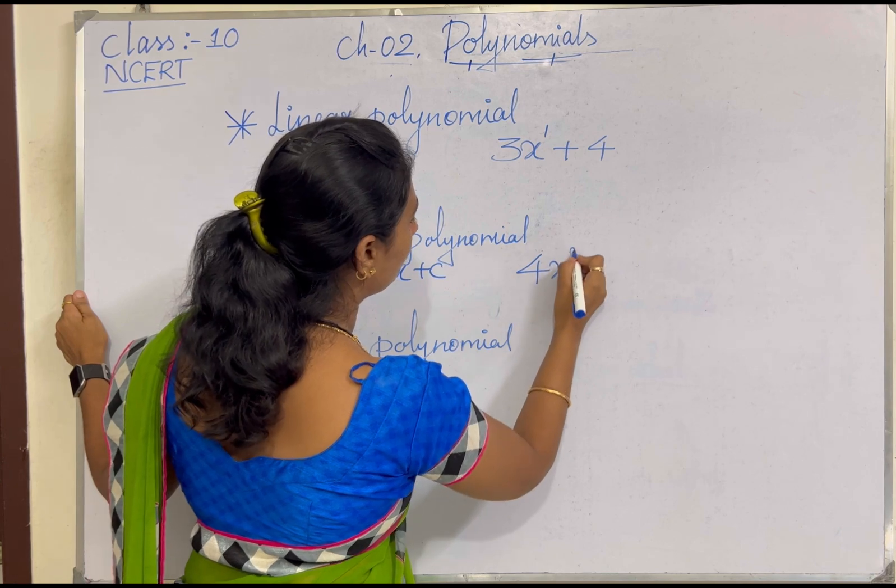In this video, we discussed what is a polynomial — 'poly' means many, 'nominal' means terms, and when terms are connected with plus or minus it forms a polynomial expression. The power of a polynomial expression must be a whole number starting from 0. Based on the degree, polynomials are classified as linear, quadratic, and cubic. We discussed quadratic polynomials in detail, including the relationship between zeros and their coefficients. Please continue with the exercises in the next video. Thank you for watching.